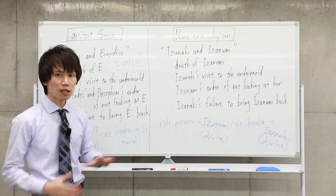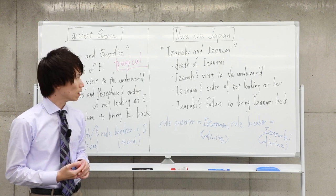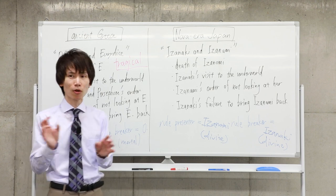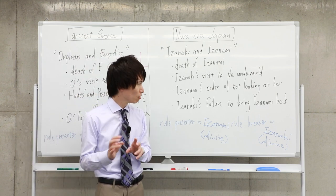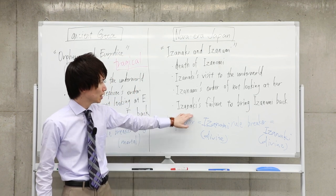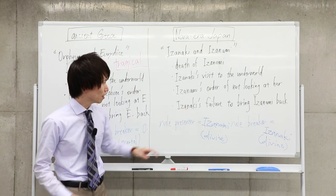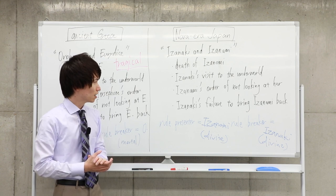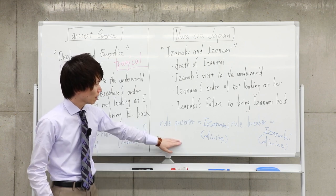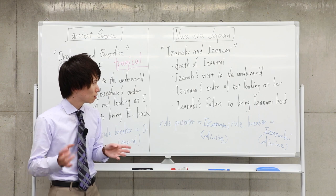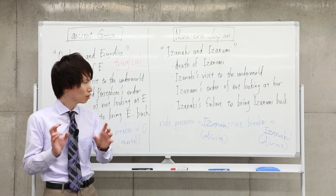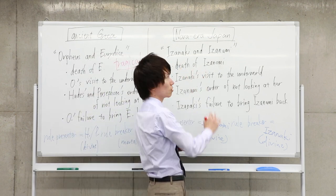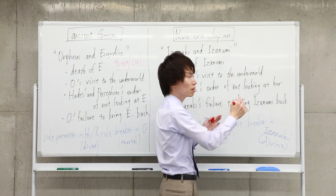So when Izanami orders Izanaki not to look at her, this is a kind of everyday promise between a normal married couple. When Izanami finds her husband looking at her, Izanami is very furious and chases Izanaki. This is kind of an everyday quarrel between husband and wife. So I think the Japanese story generates an impression of the comical.